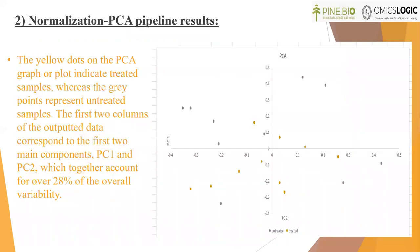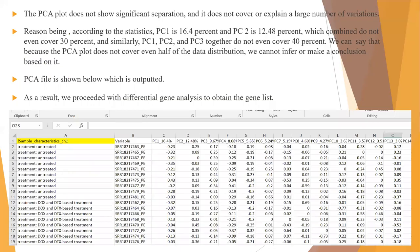The normalization PCA pipeline results are shown next. The yellow dots on the PCA graph indicate treated samples, whereas the grey points represent the untreated samples. The PCA plot does not show significant separation. PCA1 accounts for 16.4% and PCA2 for 12.48%, which combined do not even cover 30%, and PCA1 + PCA2 + PCA3 together do not even cover 40%. Since the PCA plot does not cover even half of the data distribution, we cannot draw a conclusion based on it, so we proceeded with differential gene analysis.